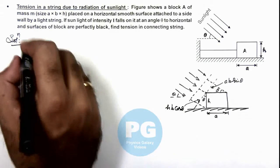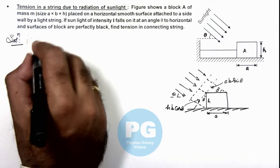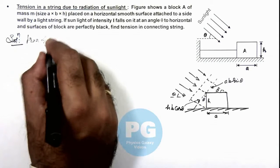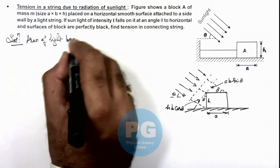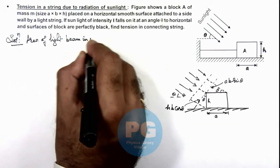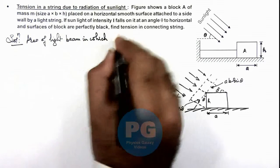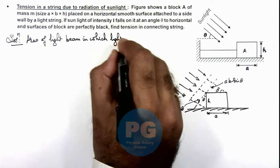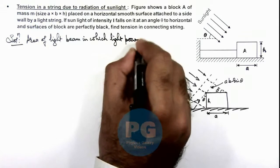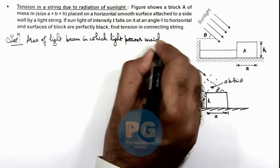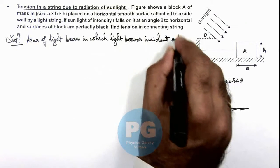So we can first calculate the area of light beam in which light power incident on block.